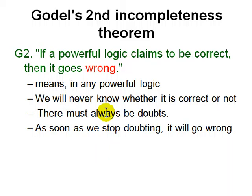One example of such a powerful logic is arithmetic — Peano arithmetic with natural numbers. You can represent a lot of things in it using natural numbers with plus and multiplication. A good reference for that is Enderton's book on mathematical logic.